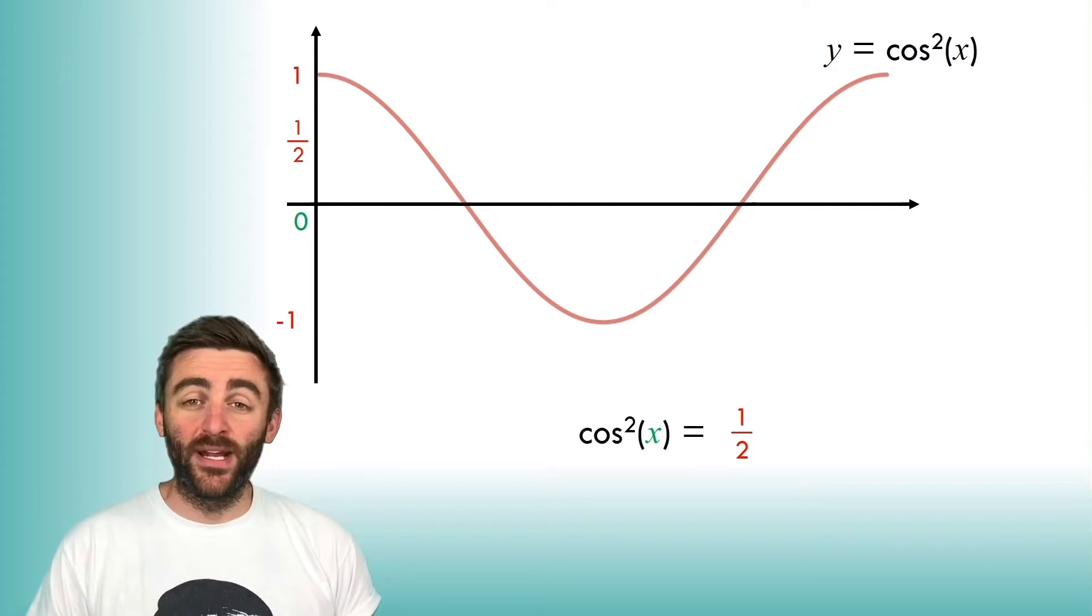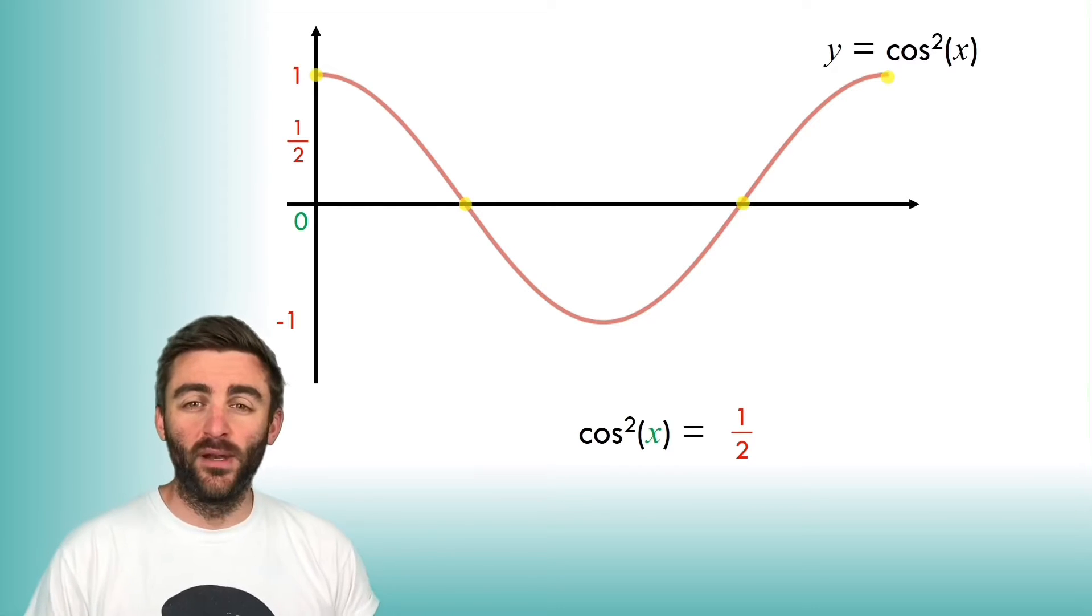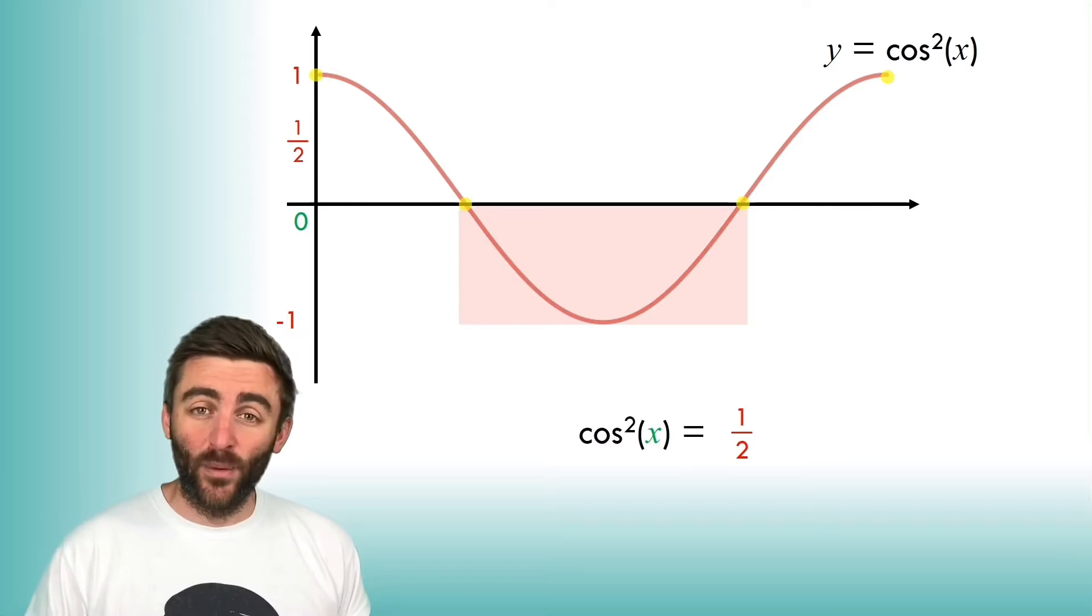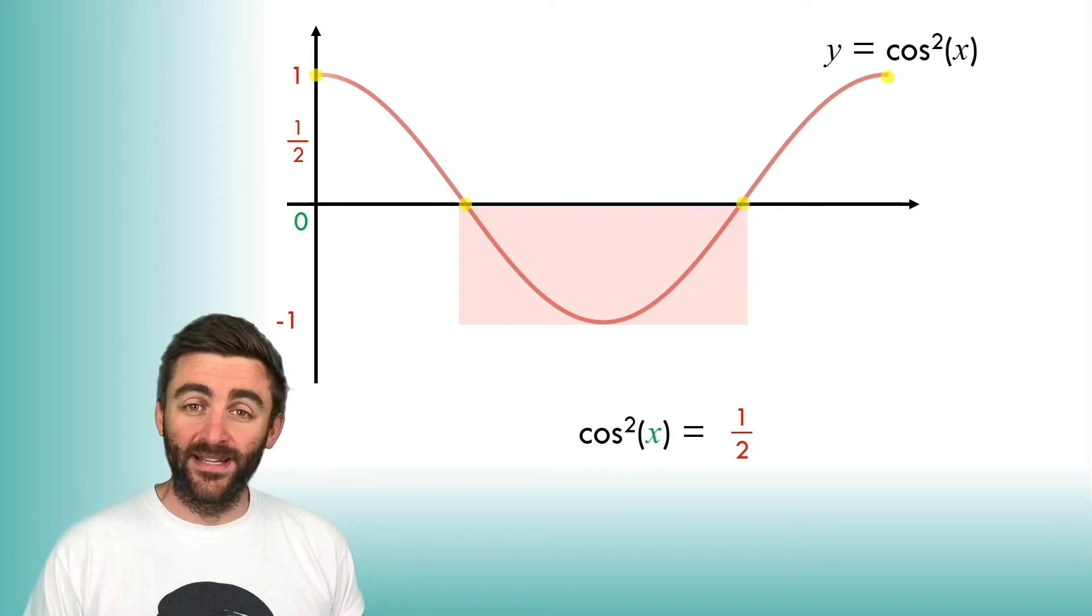So any point on the initial graph that has a y coordinate of 0 or 1 will still have a y coordinate of 0 or 1 on the new graph. But the big change is that any negative y coordinates will become positive when they're squared. So the graph of cos²x really looks like this.